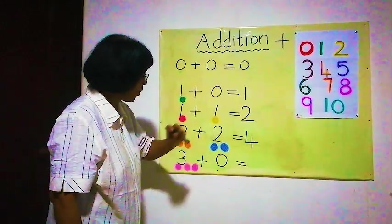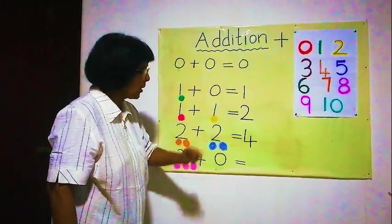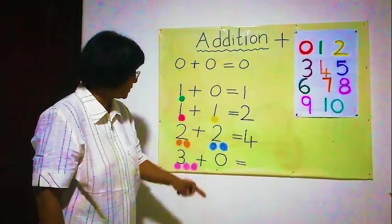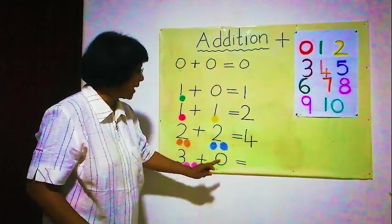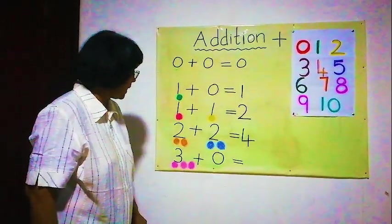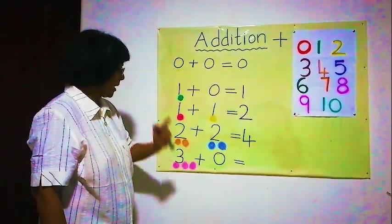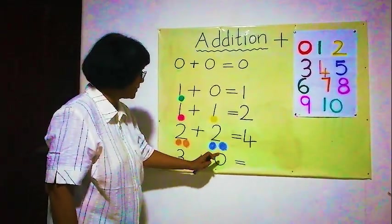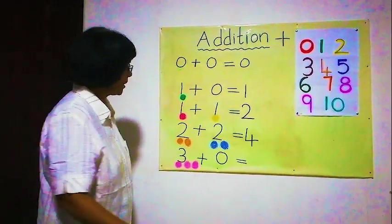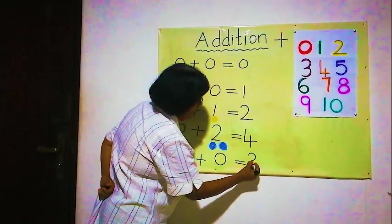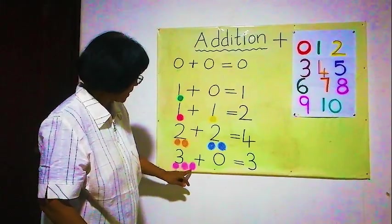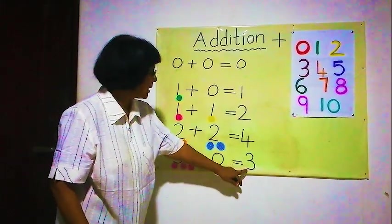And here, zero. For zero, can I draw one ball? No. Can I draw two balls? No. Nothing — no value. You can't draw anything. The answer will be one, two, three. Three and zero makes three. What will be the answer? Three. Zero has no value. So one, two, three — the only answer is three.